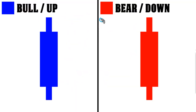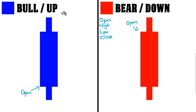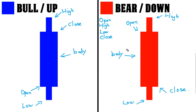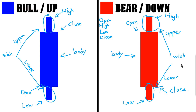Let's take a look at the Heikin Ashi candlestick body. I painted bullish candles as blue and bearish candles as red — you can customize whatever color you prefer. Heikin Ashi candlestick's body is the same as a normal candlestick. It has an open, high, low and close — a body, and lower and/or upper wick. Some call it a shadow if you prefer.